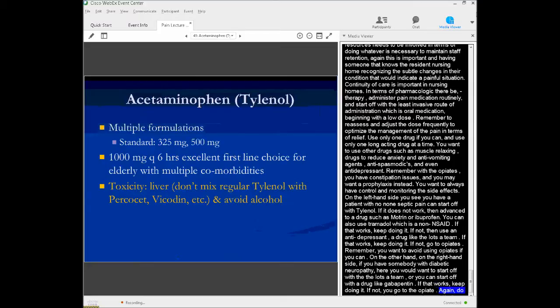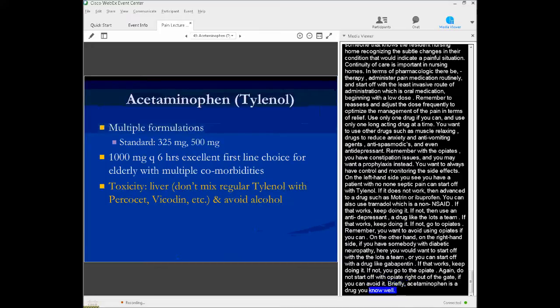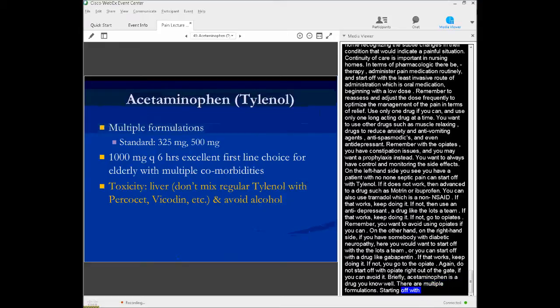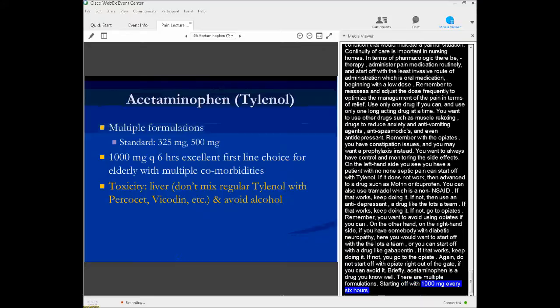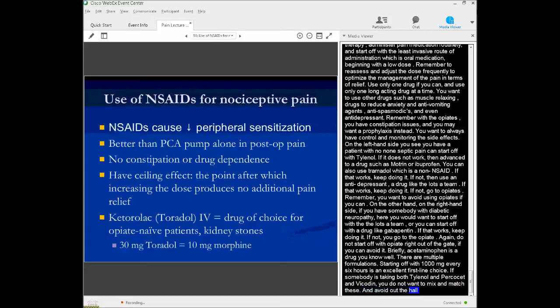So briefly, acetaminophen is a drug you know well, or it has multiple formulations. Starting off with 1,000 milligrams every six hours is an excellent first-line choice. The primary toxicity with acetaminophen is liver. So if somebody is taking both Tylenol and Percocet and Vicodin, two drugs that have acetaminophen in them, you don't want to mix and match. And you want to avoid alcohol because that may have effects on the way the liver detoxifies acetaminophen.